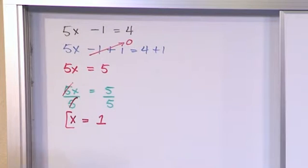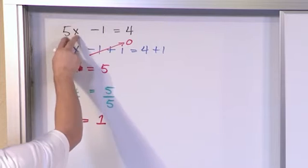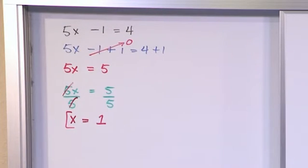And so if you want to check your work, you take x is equal to 1, stick it back in there. 5 times 1 is 5. 5 minus 1 does give us 4. So that is the correct answer.